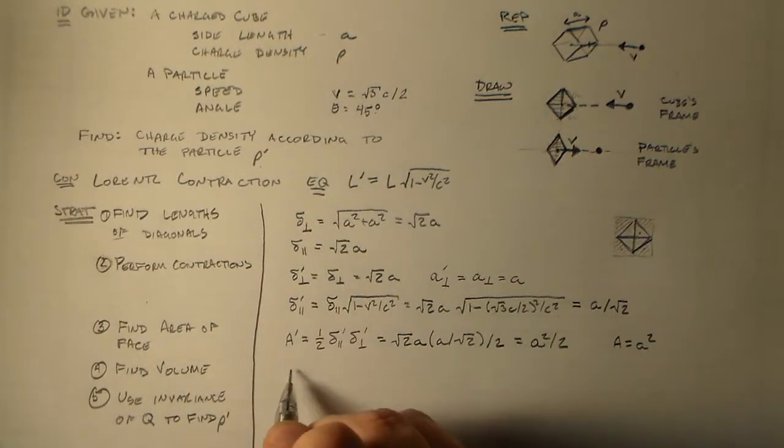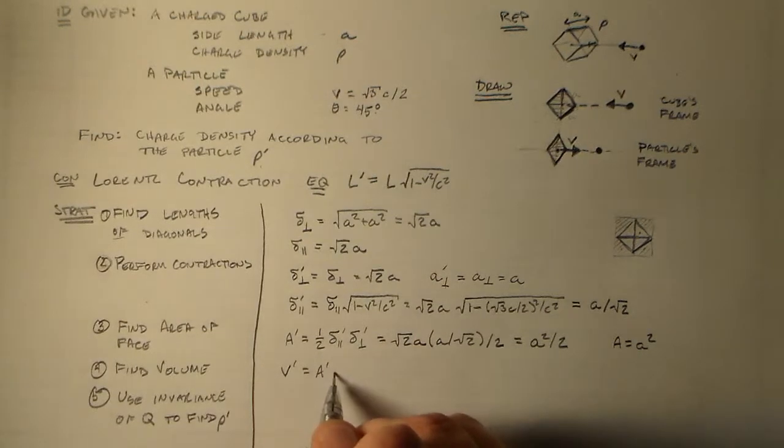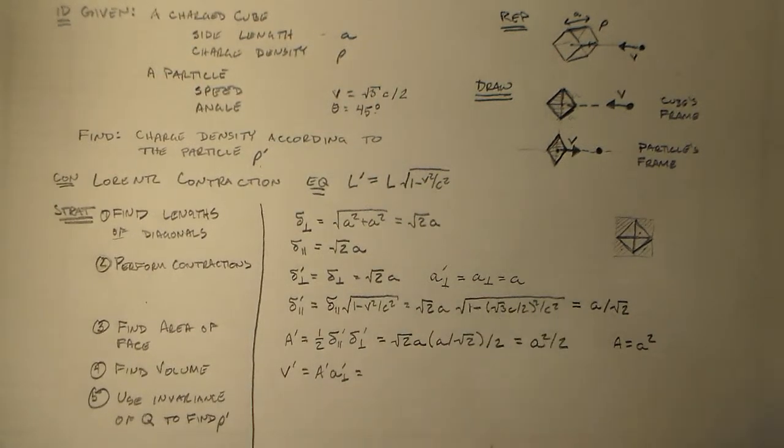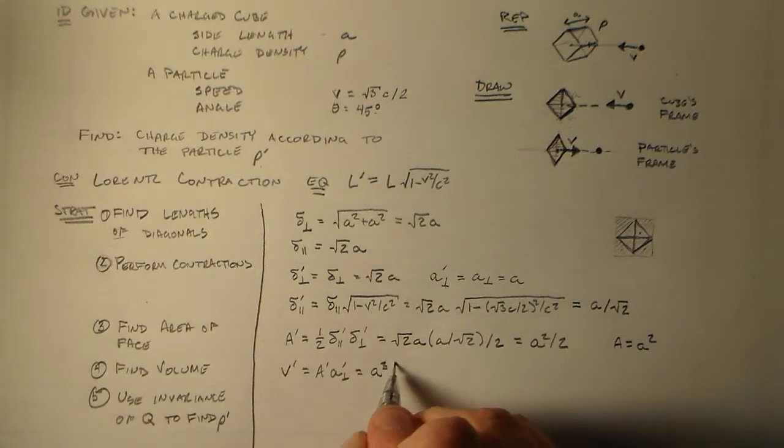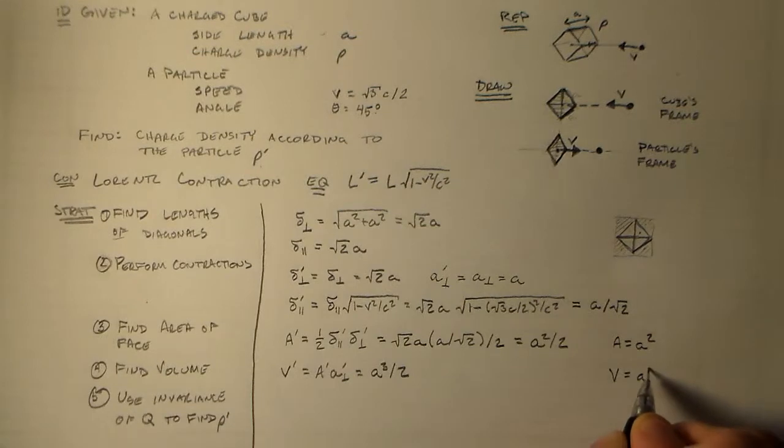So the volume then, V' is equal to A' times A⊥'. A⊥' was still just A, so we have A³/2, whereas V originally was A times A times A, which is A³.